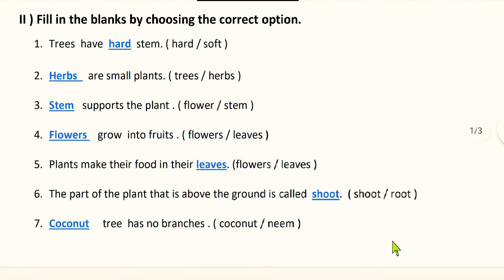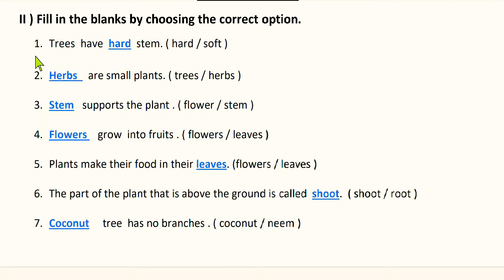We shall move to the next bit: fill in the blanks by choosing the correct option. One statement is given with two options. First question: trees have a blank stem. Trees are big plants, so do they have hard stem or soft stem? Trees have hard stem — they are big and have a strong and woody stem. The correct option is hard.